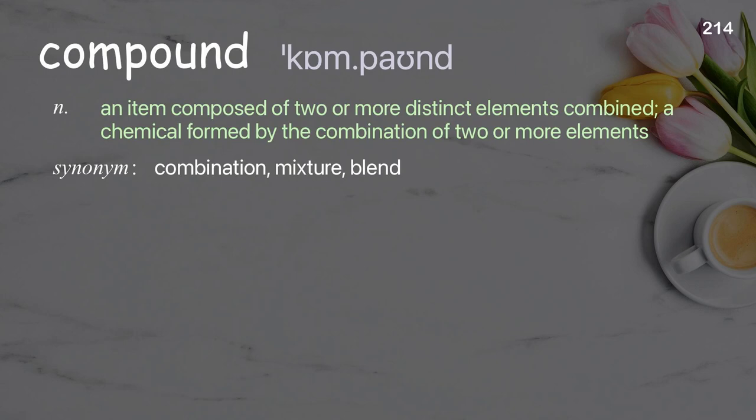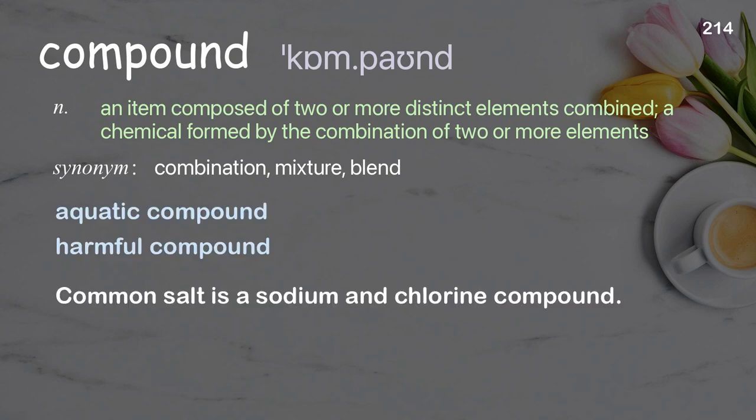Compound: an item composed of two or more distinct elements combined; a chemical formed by the combination of two or more elements. Examples: aquatic compound; harmful compound. Common salt is a sodium and chlorine compound.